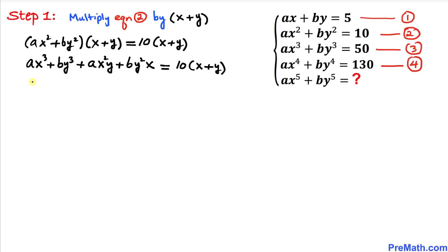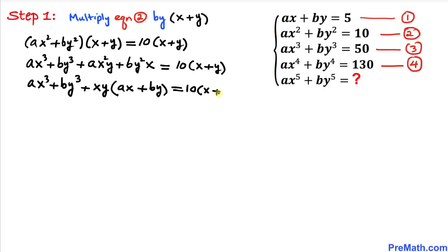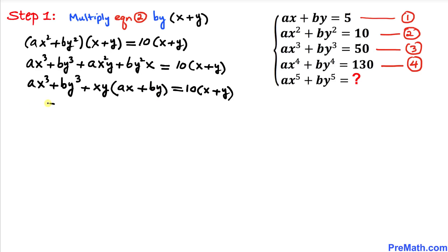Let's simplify further. We write ax³ + by³ as it is, then factor out xy from the remaining terms, giving ax + by inside the parenthesis, equals 10(x + y). Now ax³ + by³ equals 50, so we replace it with 50. And ax + by equals 5, so we replace that with 5. This gives us 50 + 5xy = 10(x + y).